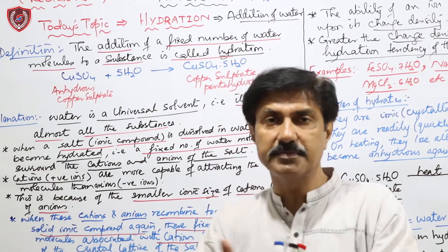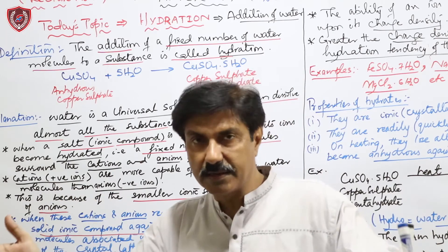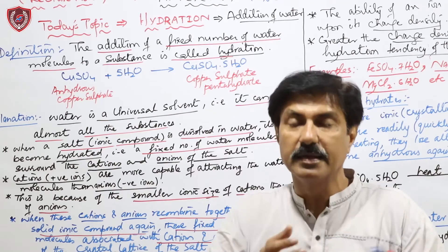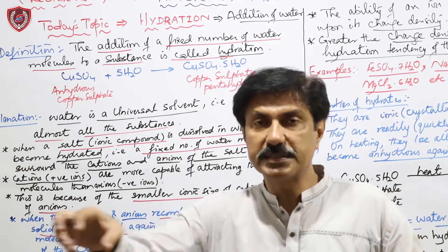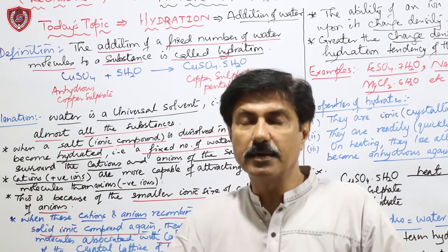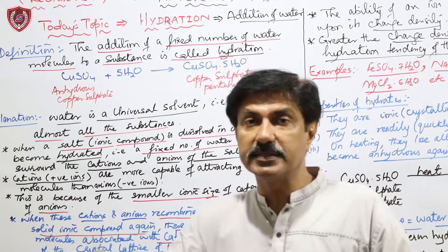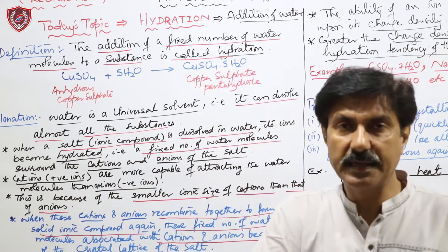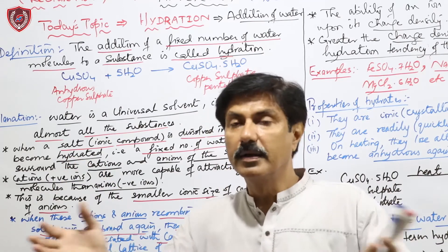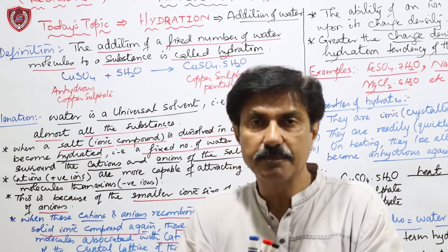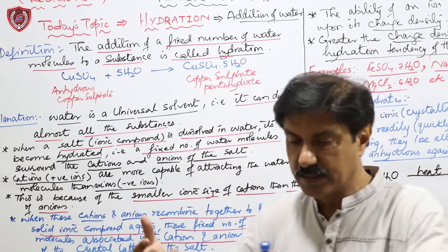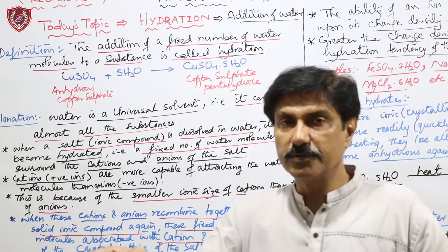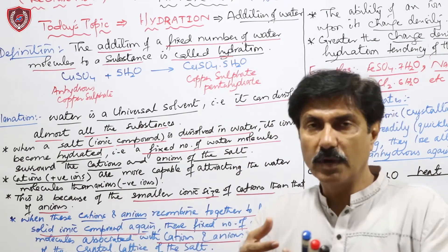Cations کا size اپنے parent atom سے چھوٹا ہوتا ہے؛ anions کا size بڑا۔ Size میں چھوٹے ہونے کی وجہ سے cations زیادہ تعداد میں water molecules کو attract کرتے ہیں؛ جبکہ anions کے ساتھ نسبتاً کم water molecules جڑتے ہیں۔ لہٰذا the tendency of cations to be hydrated is greater than the tendency of anions to be hydrated۔ جب ions دوبارہ recombine ہوتے ہیں — کیونکہ ionization reversible process ہے — تو جتنی تعداد میں water molecules ions کے ساتھ جڑے تھے، وہ crystal lattice میں شامل ہو جاتے ہیں۔